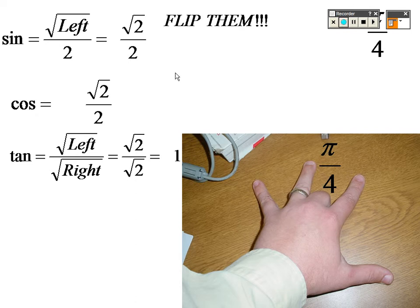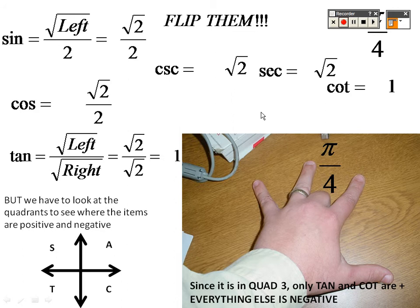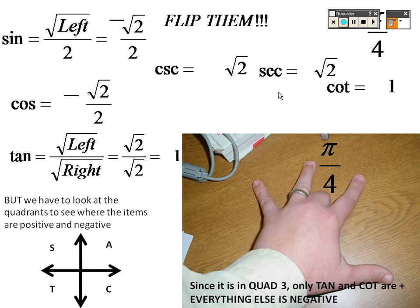You flip them all to get the rest: cosecant is √2 (because 2√2/2 simplifies), secant is also √2, and cotangent is 1. Because we were in quadrant 3, tangent is positive, so cotangent is positive as well. Everything else is negative: cosine and secant are negative, and sine and cosecant are negative.